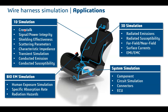You can look at signal and power integrity, shielding effectiveness, and scattering parameters, which give you a complete overview of what is happening with your cabling. You can also perform characteristic impedance calculations, TDR (time-domain reflectometry) analysis to understand whether impedance changes across the cable, and conducted emission and conducted susceptibility tests as part of the 1D simulation.